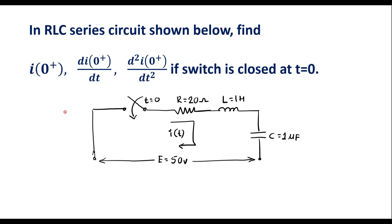In this video, let me consider one numerical on initial conditions. In the RLC series circuit shown below, find i(0+), di(0+)/dt, and d²i(0+)/dt² if the switch is closed at t equal to 0.